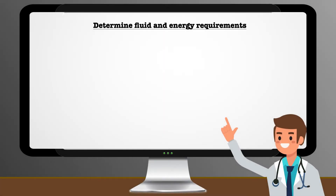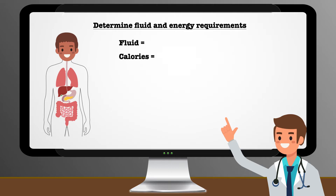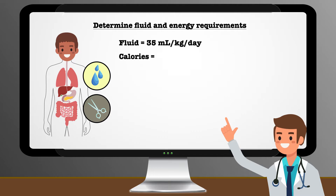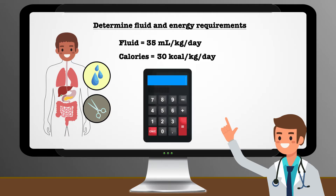The first step to creating the order is to determine the fluid and energy requirements. The patient's only condition is Crohn's disease, so there is no need to restrict fluid. His energy needs can be considered slightly elevated due to his recent surgery, but we still want to be careful not to overfeed and increase risk for complications. Using a simple weight-based calculation, we estimate his fluid and energy needs at 35 ml per kg per day and 30 calories per kg per day, respectively. To get fluid, we multiply 35 by 68 to get 2,380 mL, and to get energy, we multiply 30 by 68 to get 2,040 calories.